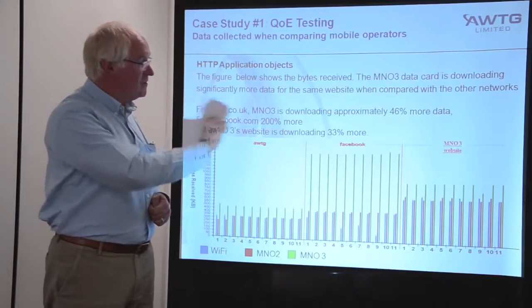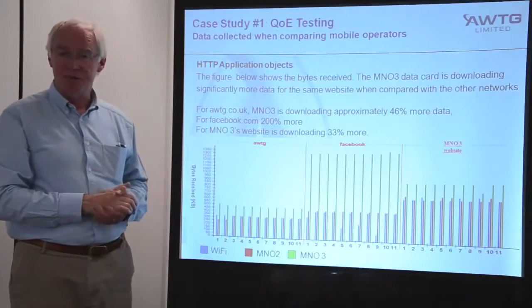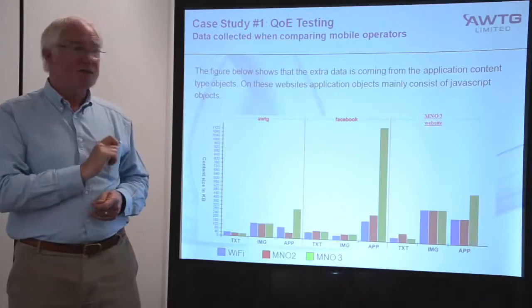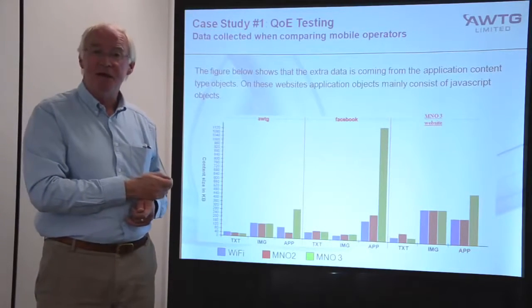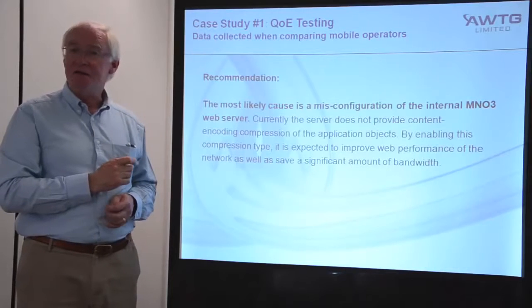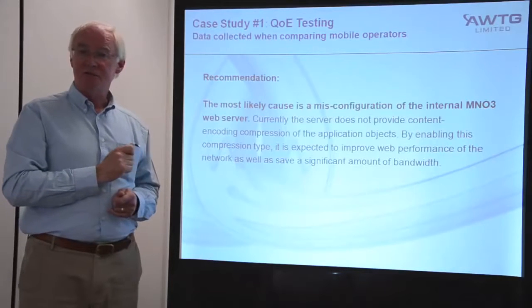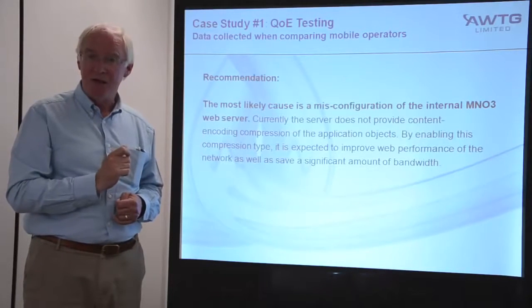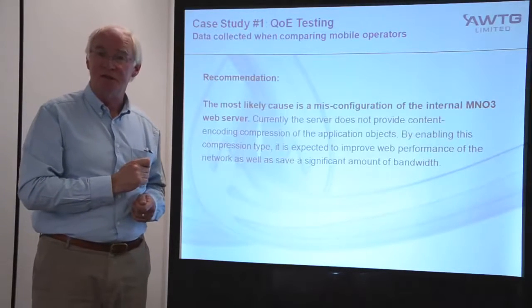For the first website, perhaps 46% more data was being downloaded. When we visited Facebook, over 200% more data was being downloaded. This extra data was coming from the application content, and on these websites the application objects consist mainly of JavaScript objects. We conclude that most likely the internal network web server for this operator was incorrectly set — the server was not providing content encoding compression of the application objects. By enabling this, it is expected that they would improve web performance as well as saving significant amounts of bandwidth.